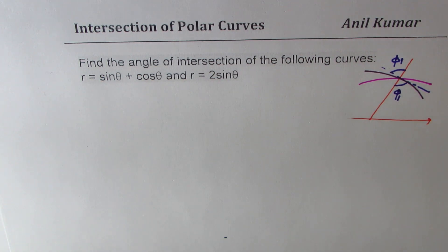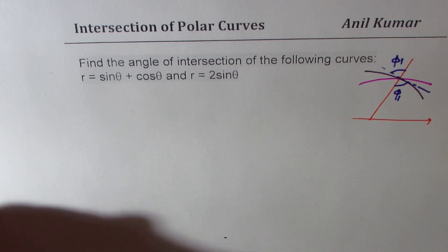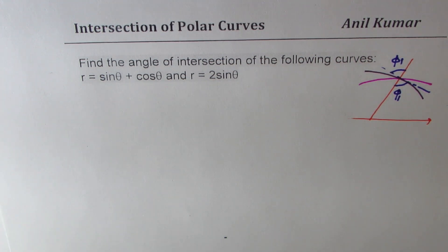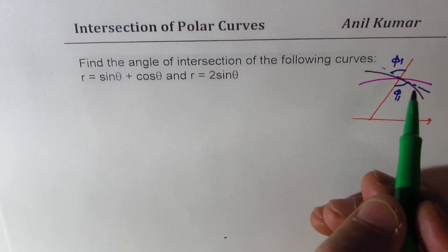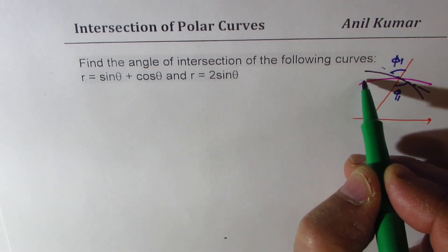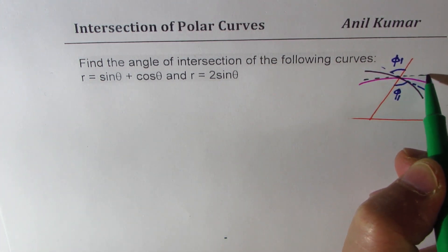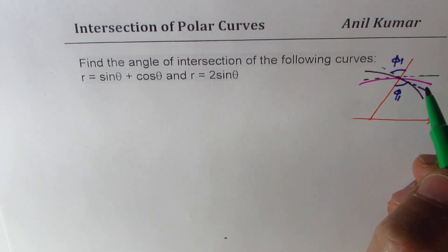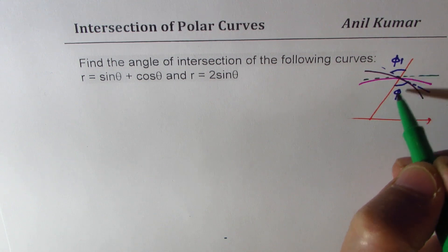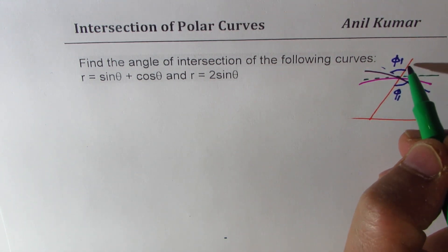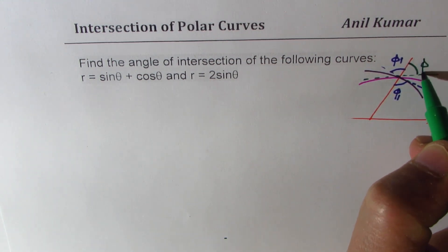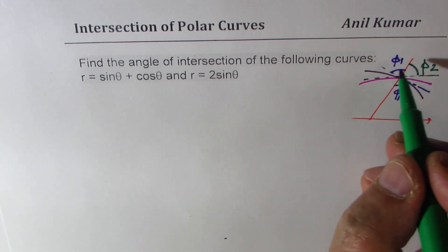Now for the second curve, the tangent could be, let's take a different ink, like this. So in that case, the angle with the radial vector is phi 2.